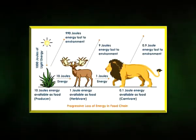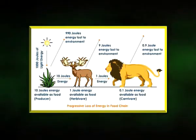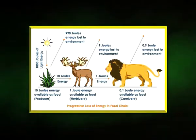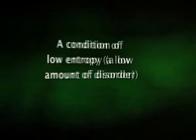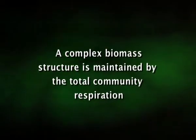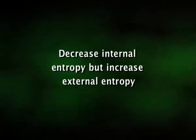The second law of thermodynamics states that no process involving an energy transfer will spontaneously occur unless there is degradation of energy from a concentrated form into a dispersed form. Every ecosystem possesses certain thermodynamic characteristics and can create and maintain a high state of internal order, or a condition of low entropy — a low amount of disorder. A complex biomass structure is maintained by the total community respiration, which continuously pumps out disorder. Accordingly, ecosystems are open non-equilibrium thermodynamic systems that continuously exchange energy and matter with the environment to decrease internal entropy and increase external entropy, thus confirming to the laws of thermodynamics.